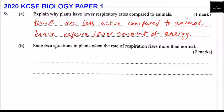Part B of the question: state two situations in plants when the rate of respiration rises more than normal.